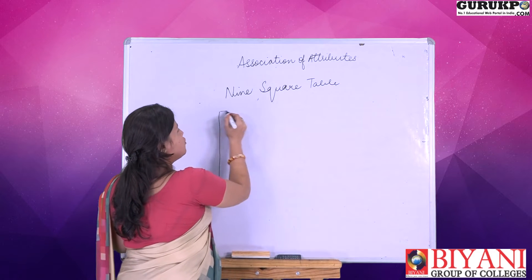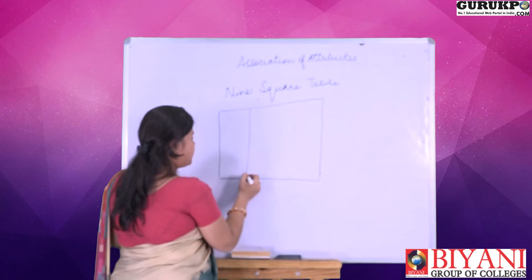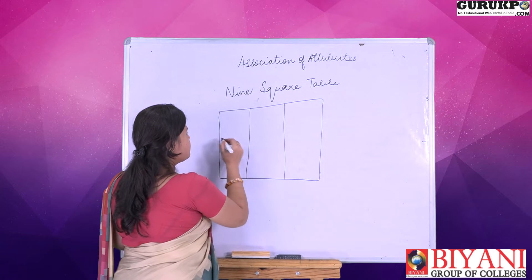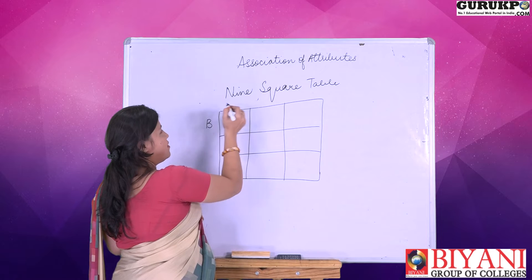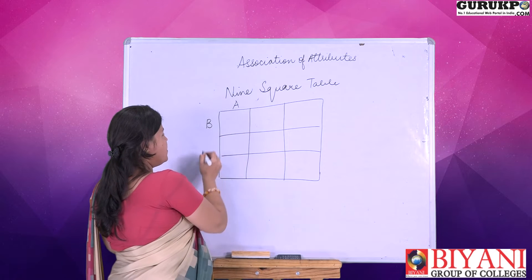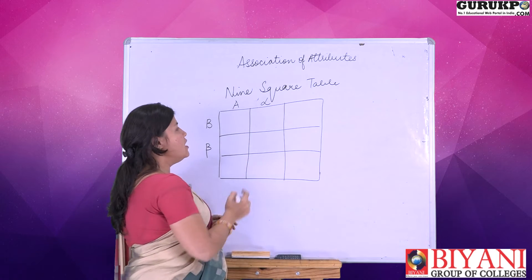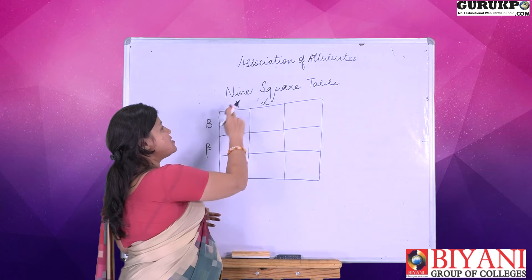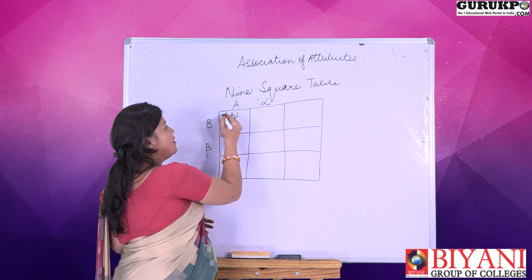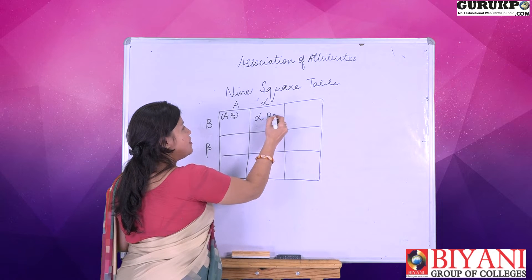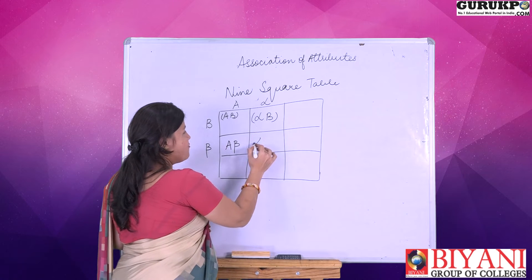To make the 9-square table, I am creating 9 blocks. Here I am writing B at the top, and A on the side. The absence of B is shown by beta, and the absence of A is shown by alpha. We are going to multiply these vertically: A into B, alpha B, A beta, and alpha beta.